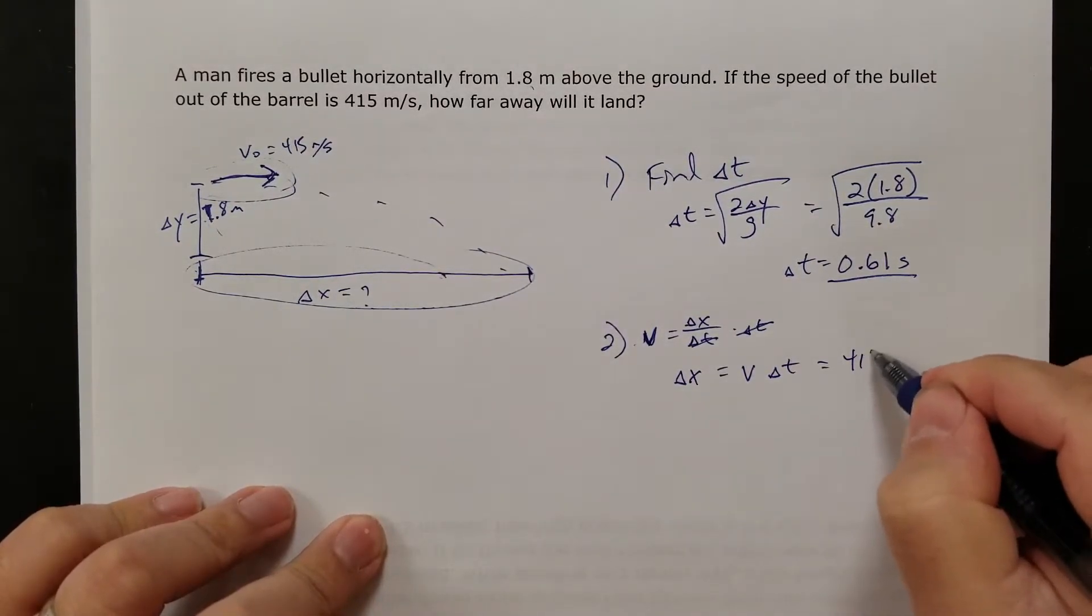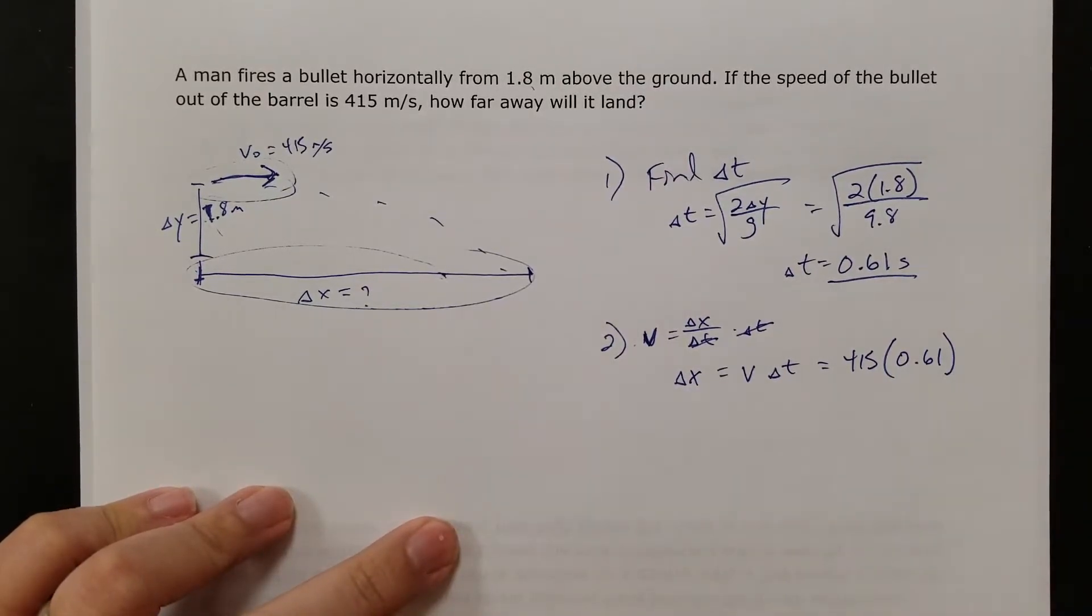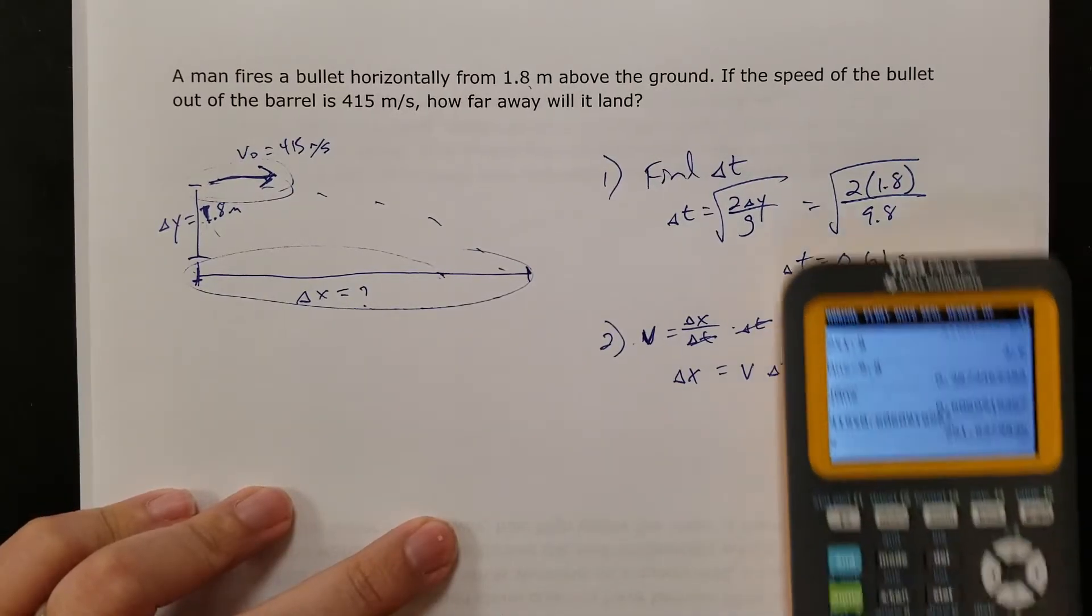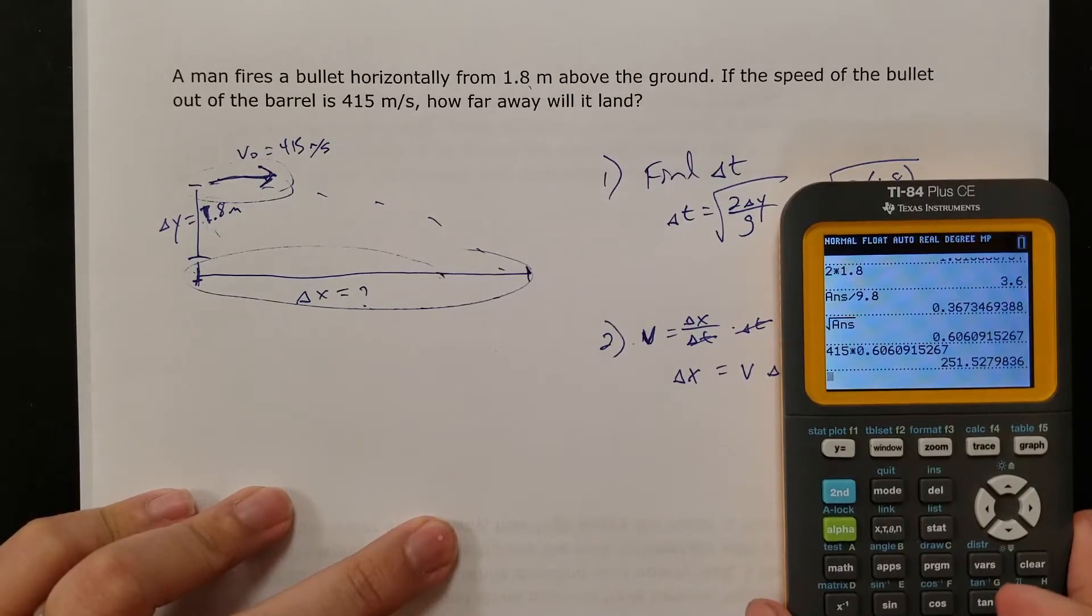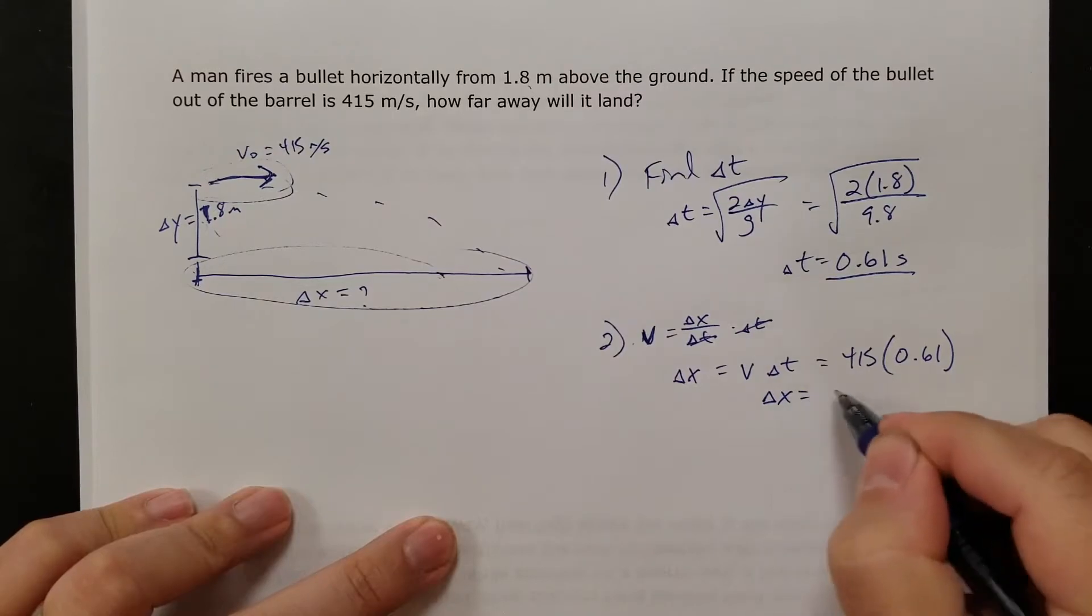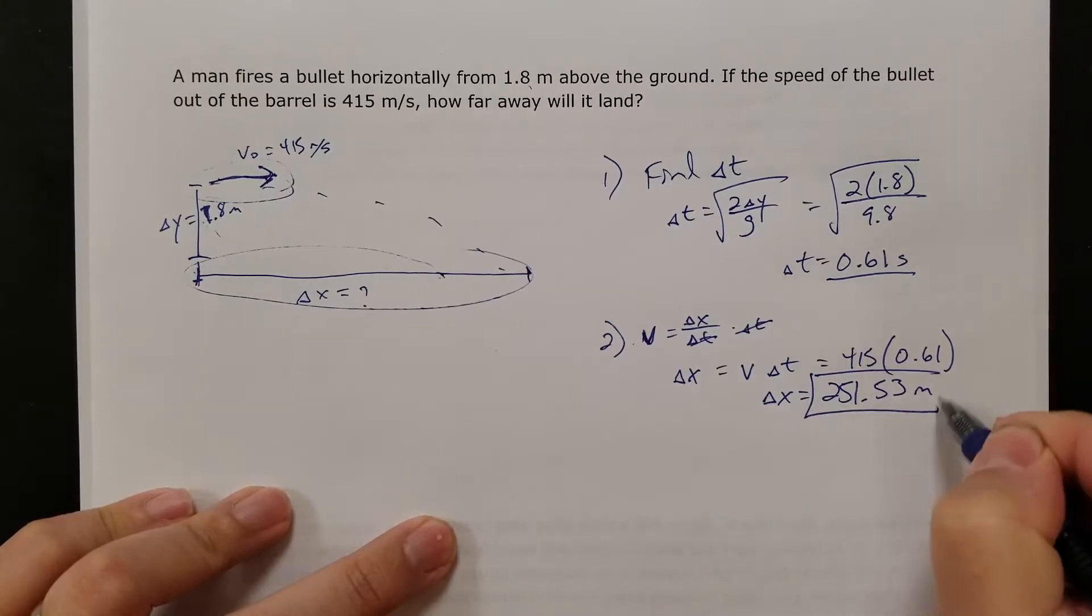So velocity was 415, my time is 0.61. So if I do 415 times my answer from before, that gives me 251.52 seconds. So delta x is 251.53 meters.